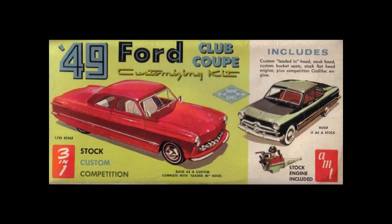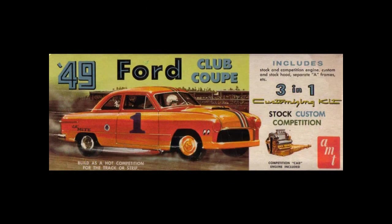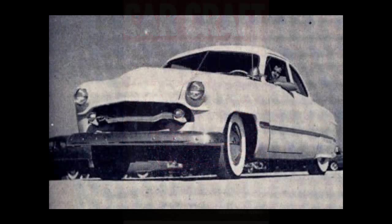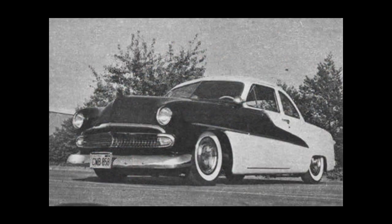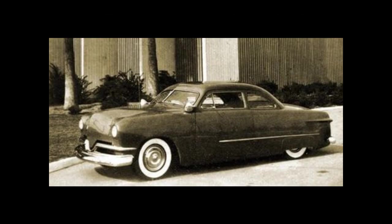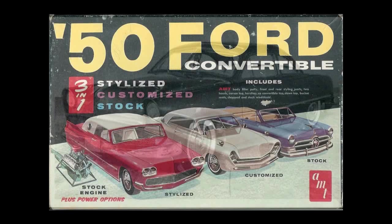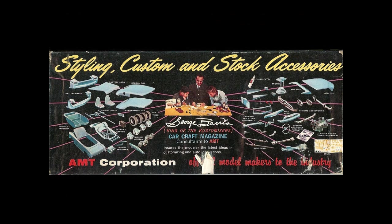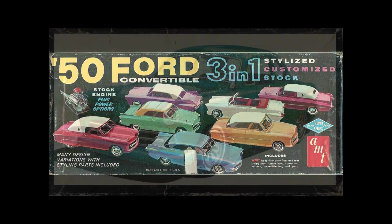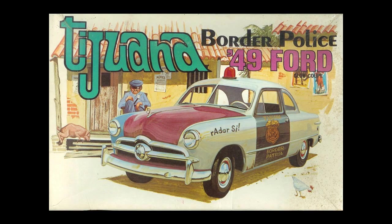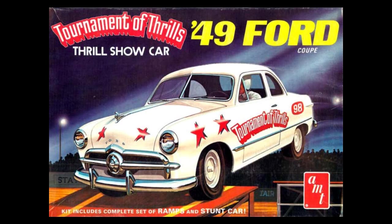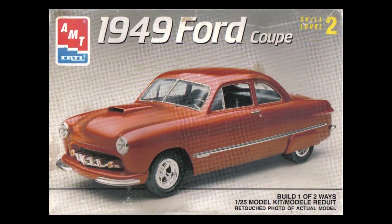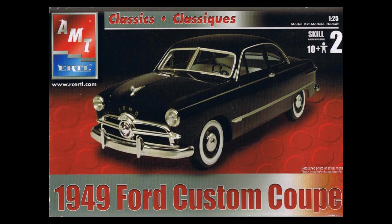The AMT 1949 Ford Coupe came out in 1962 at the height of the custom car craze. The 1949 to 1951 Ford was the most customized car of the time, so it only made sense to make a model kit of it. AMT followed up with the 1950 Ford convertible, and the customizing parts are fully interchangeable with this kit. The AMT 1949 Ford Coupe kit was re-released 11 times since 1962. Did you build this kit in the past? Let us know in the comment section down below.